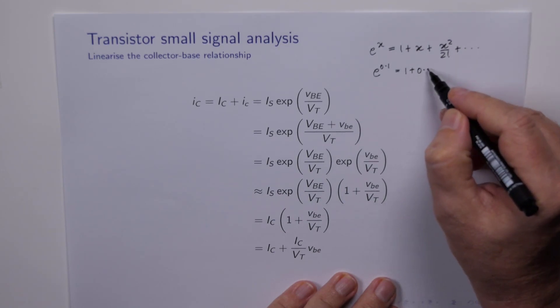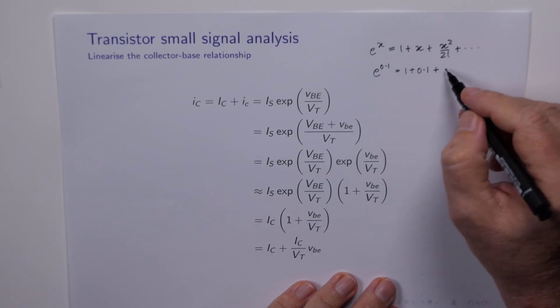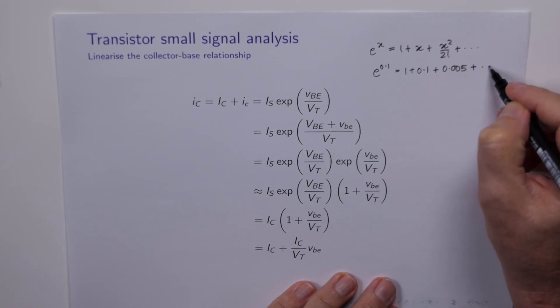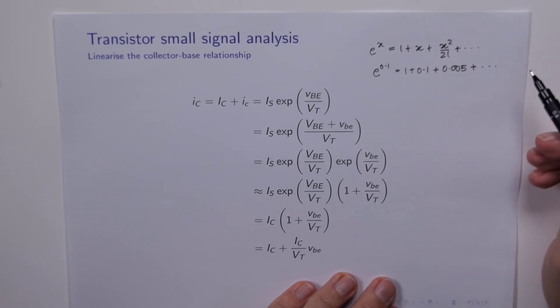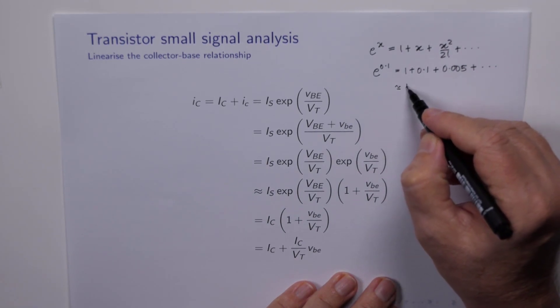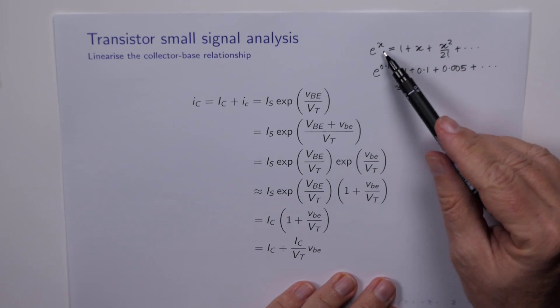For example, if X was say 0.1, then the series on the right hand side would be 1 plus 0.1 plus 0.01 divided by 2 is 0.005 plus progressively smaller terms. So you can see to some level of accuracy, e to the 0.1 is approximately 1.1.